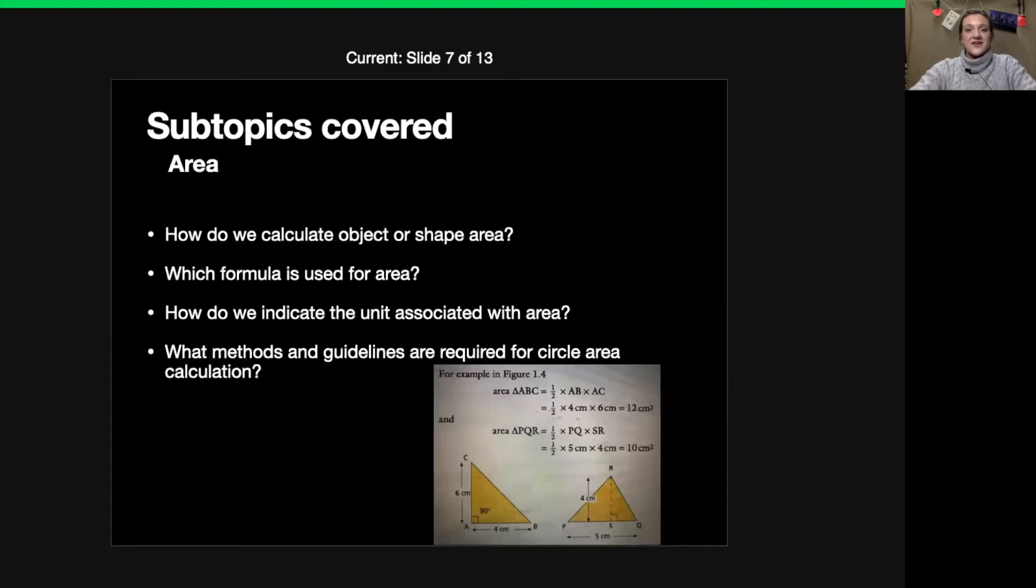In the next segment we are doing area. So how do we calculate object or shape area? In general what we use is length times breadth. Length times breadth.